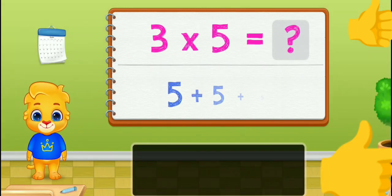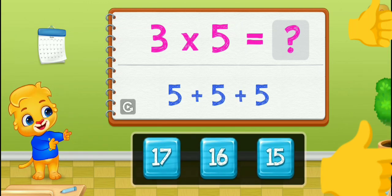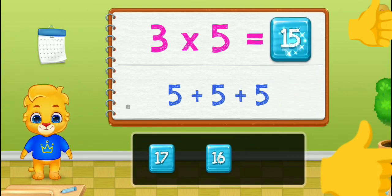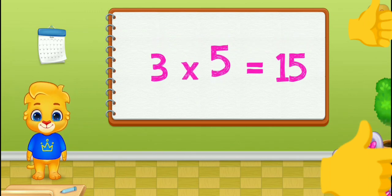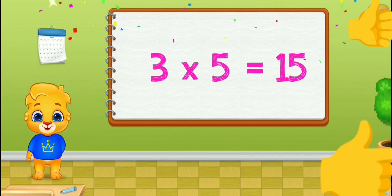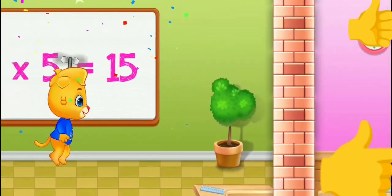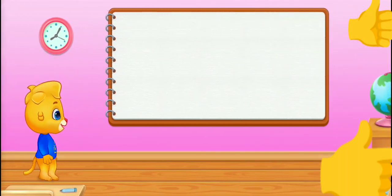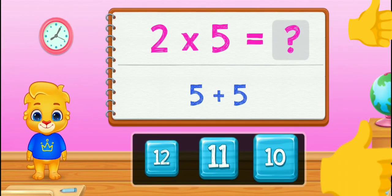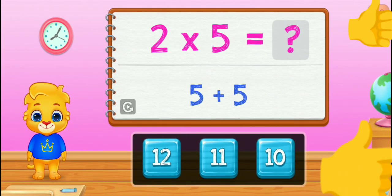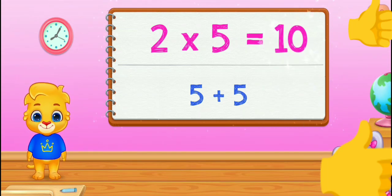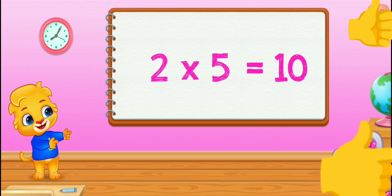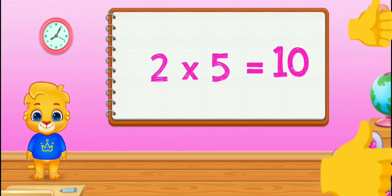Woohoo! 15. Woohoo! 3 times 5 equals 15. Woohoo! 10. Woohoo! 2 times 5 equals 10.